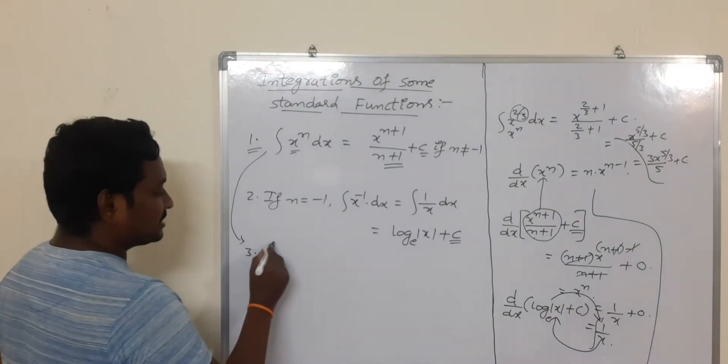Next, integral of 1 dx. In the case of differentiation of 1 it is 0, but for integration, the integral of 1 can be written as x^0. This is in the form of x^n, so applying the first formula with n = 0: x^(0+1)/(0+1) = x/1 = x. Therefore integral 1 dx = x + c.